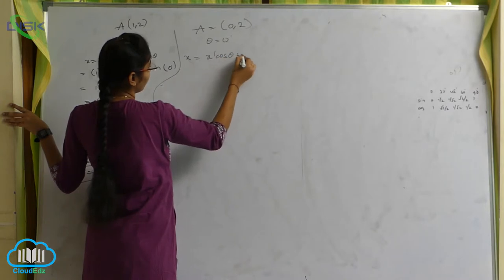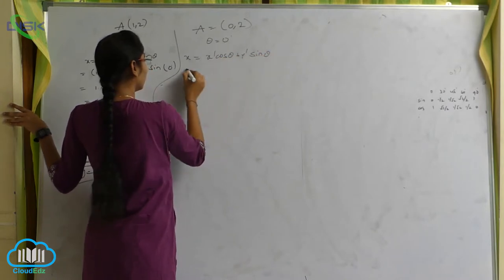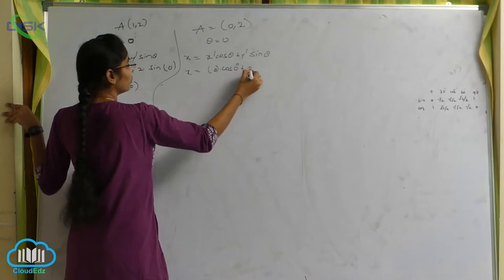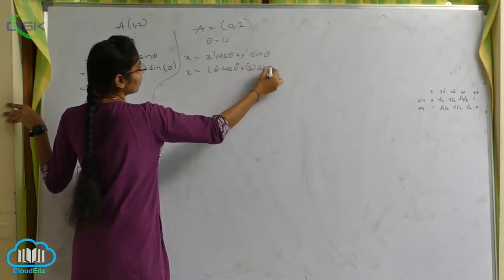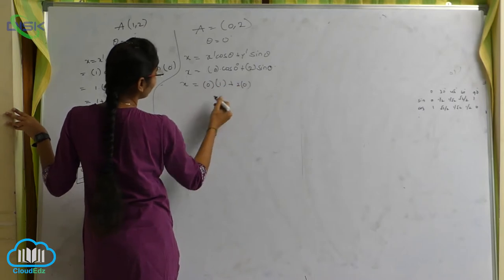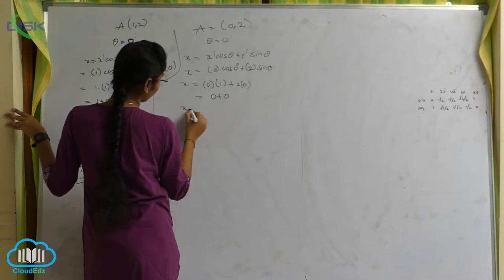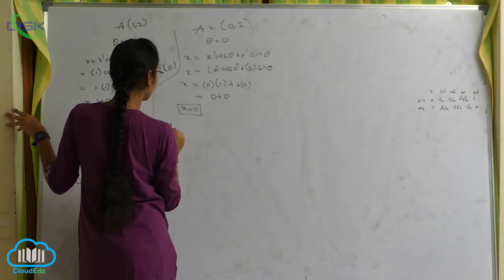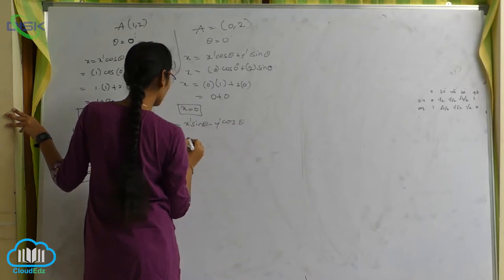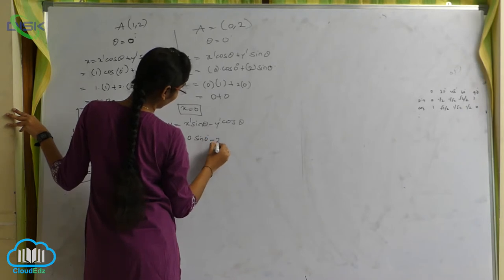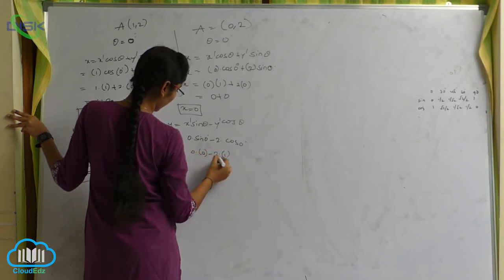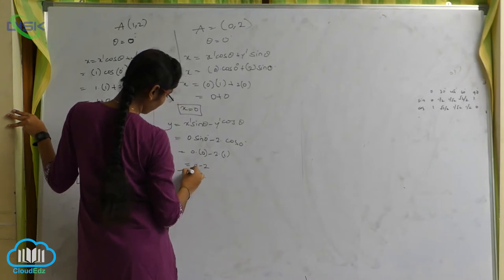For point (0, 2) with θ = 0°: x = x' cosθ + y' sinθ = 0 × cos0° + 2 × sin0° = 0 × 1 + 2 × 0 = 0. So x = 0. For y: y = x' sinθ − y' cosθ = 0 × sin0° − 2 × cos0° = 0 − 2 × 1 = −2. So y = −2.